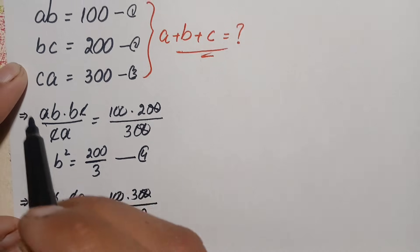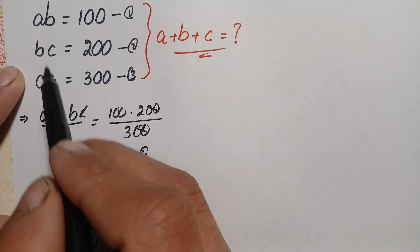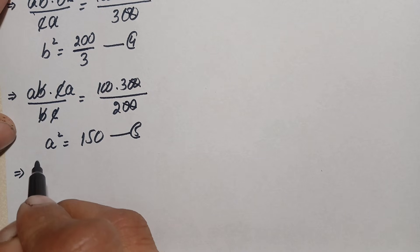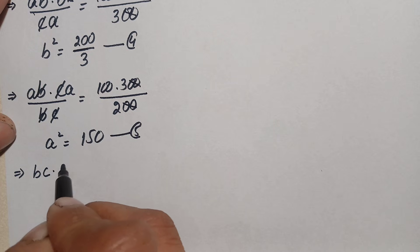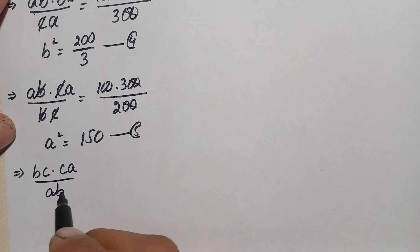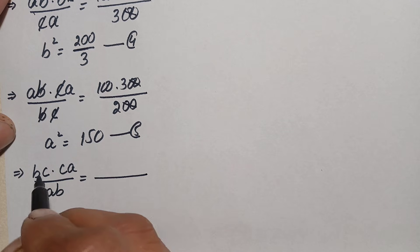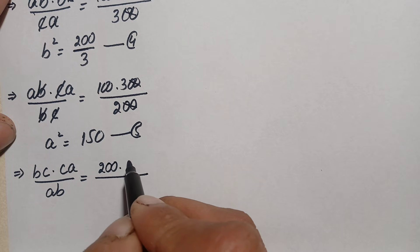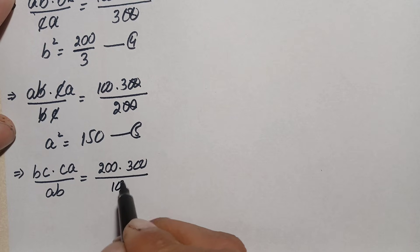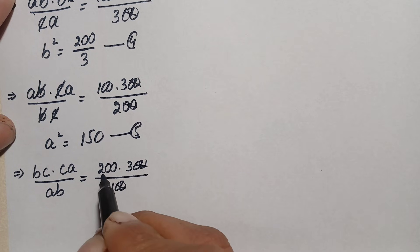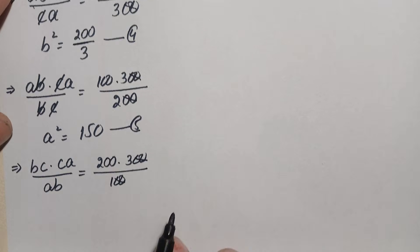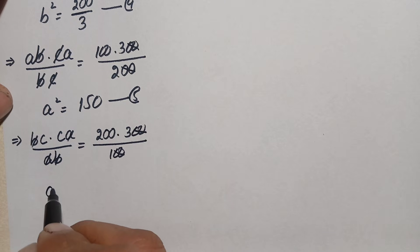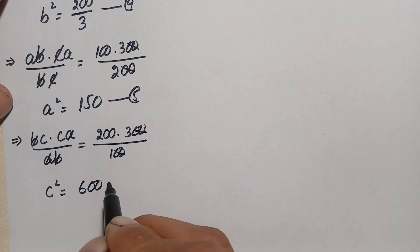To find c squared, we multiply equation number two and equation number three, and divide the result by equation number one. So b·c times c·a divided by a·b equals 200 times 300 divided by 100. Cancelling the zeros, b with b, and a with a, the value of c squared becomes 600.